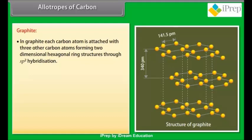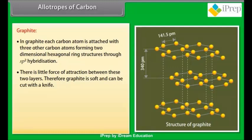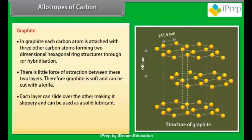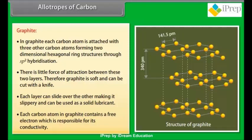Allotropes of carbon. Graphite: in graphite, each carbon atom is attached with three other carbon atoms forming two-dimensional hexagonal ring structures through SP2 hybridization. There is a little force of attraction between these two layers. Therefore, graphite is soft and can be cut with a knife. Each layer can slide over the other making it slippery and can be used as solid lubricant. Each carbon atom in graphite contains a free electron which is responsible for its conductivity.